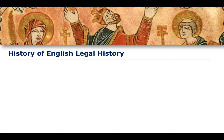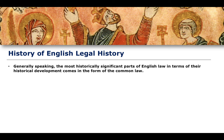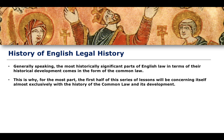Let's begin with the English legal system from a historical perspective and think about the history of English legal history. This is sort of a metahistorical study. Generally speaking, most historically significant parts of English law as we know it today, in terms of their historical development, develop out of the common law, or at least form as a part of the common law. This is why, for the first half of this series of lessons, when we look at this really early history, we will be concerning ourselves almost exclusively with the development of the common law and its history as it develops through time.